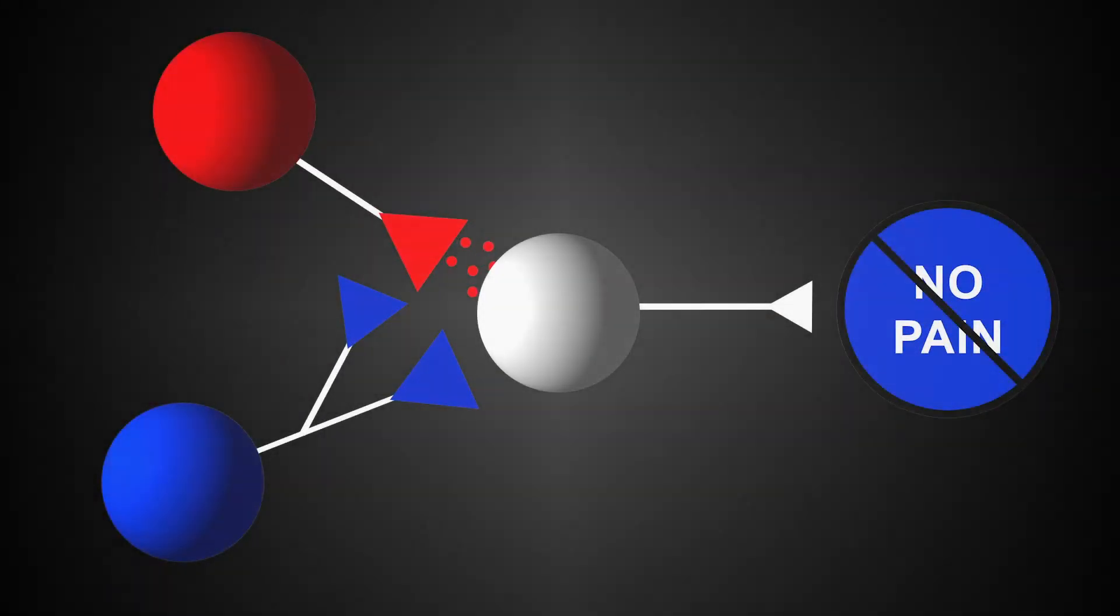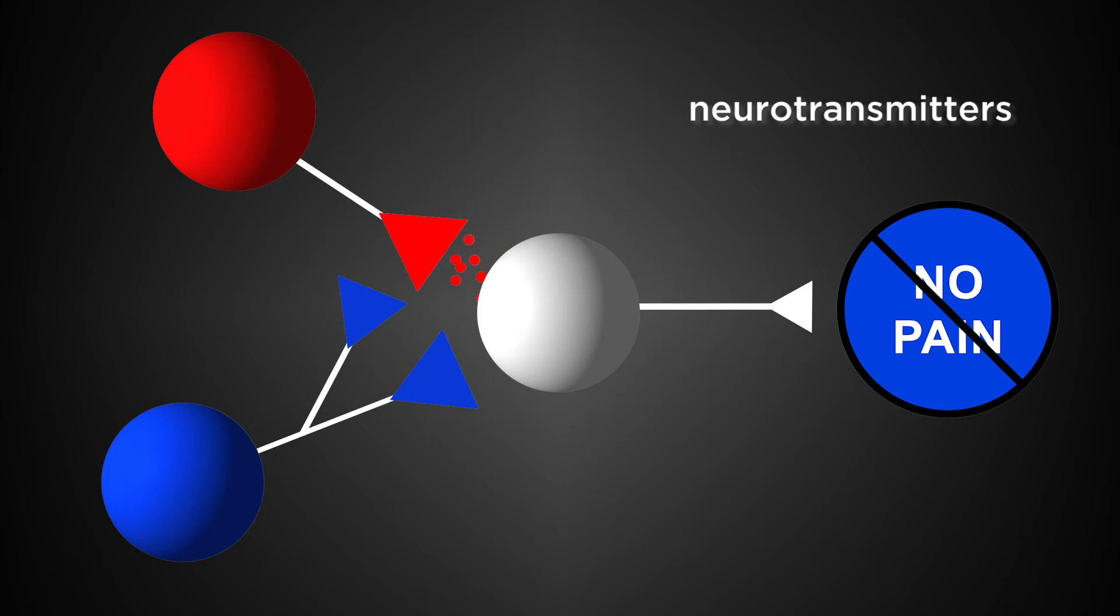Our neurons in the brain use chemicals called neurotransmitters to both send the pain signals and to stop the pain signals.